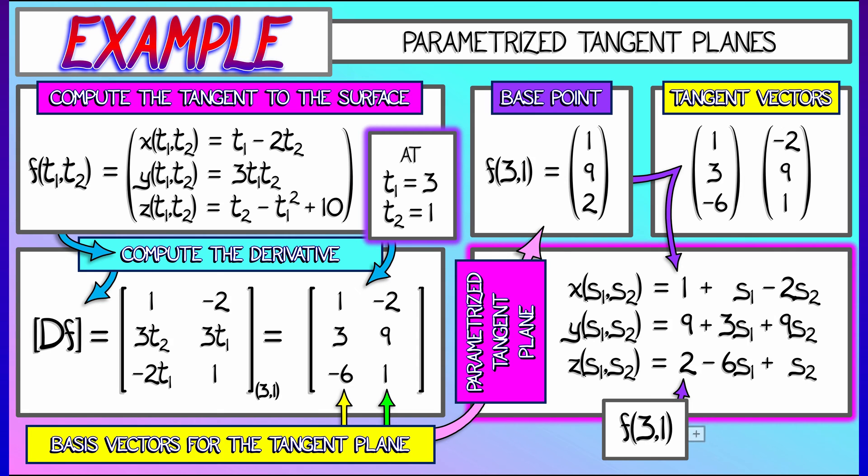Then, what do we do? We take the two basis tangent vectors, multiply each by the respective parameter, s1 and s2. That's what this matrix vector product is giving us. So, for example, when s1 and s2 are both 0, you're just at the base point. If s2 is 0 and you move s1 back and forth, then you're moving along the first basis tangent vector, and likewise with the second.